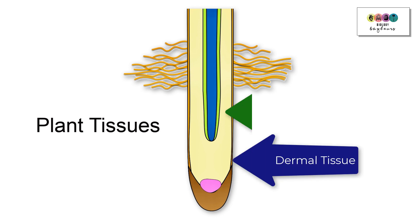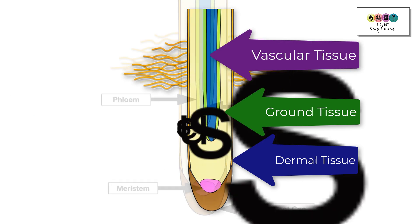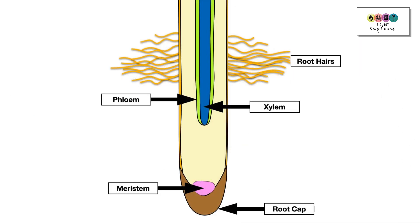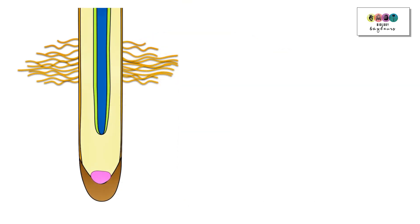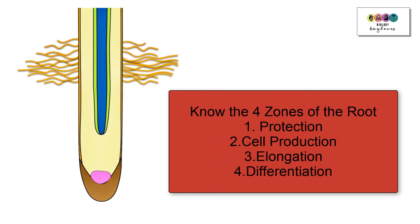A good way to revise the root would be to draw a diagram and put in the key labels on the diagram: the root cap, the meristem, the xylem, the phloem, and the root hairs. Most important that you know the four zones, because this was asked previously in exams.